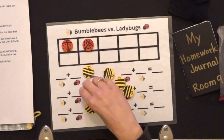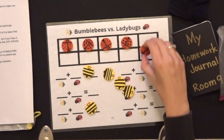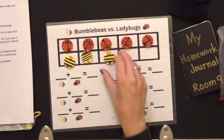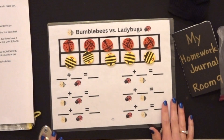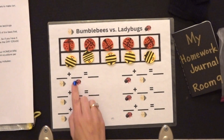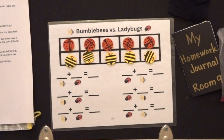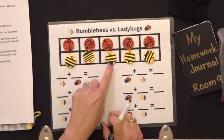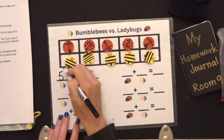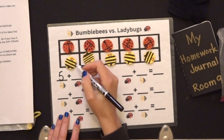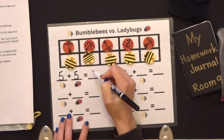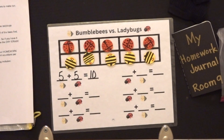You are going to see if we have more ladybugs or more bumblebees. I am going to start with ladybugs. How many bumblebees? 2, 3, 4, 5 — I have 5 bumblebees. And how many ladybugs? 1, 2, 3, 4, 5 — I have 5 ladybugs. That is 10 insects all together.